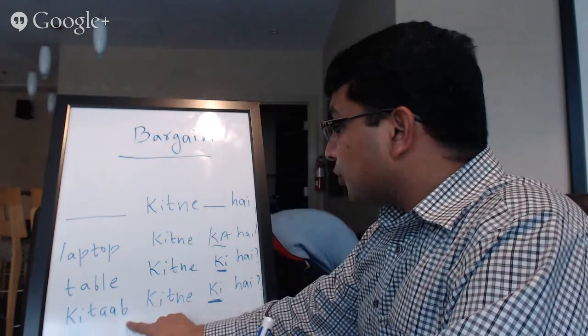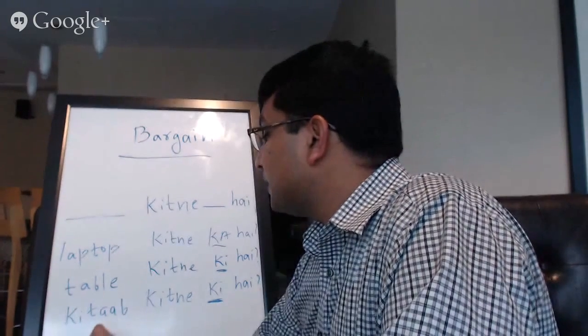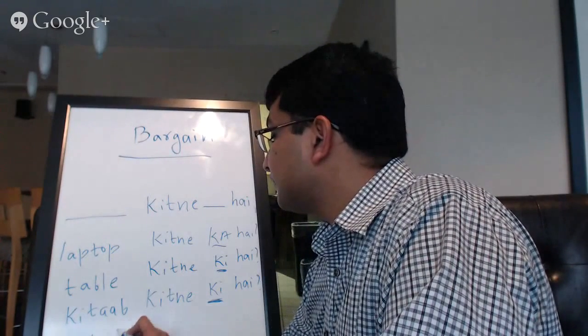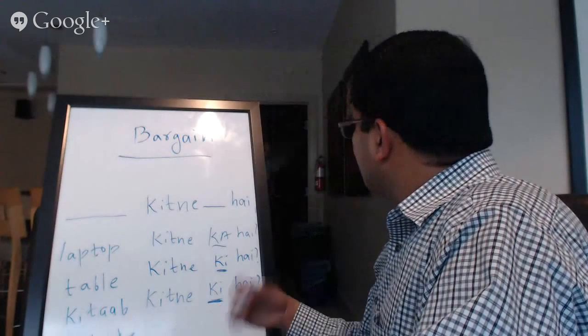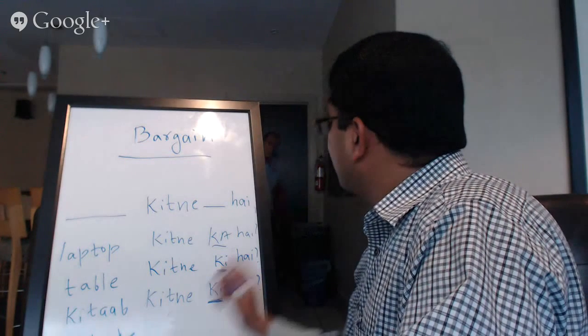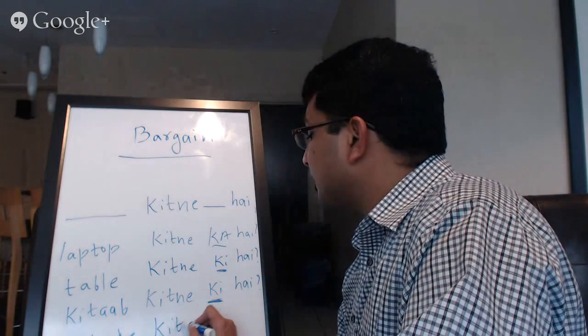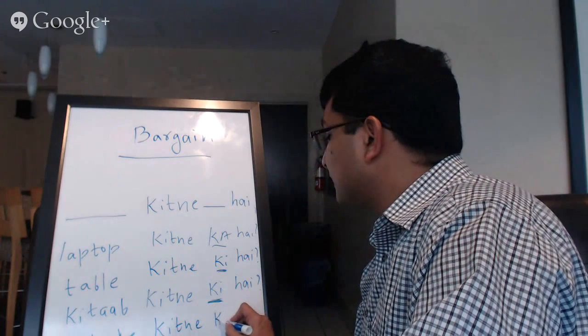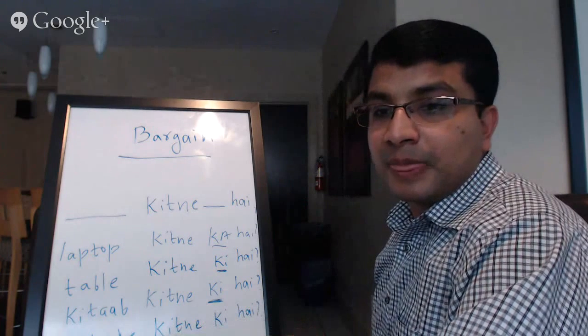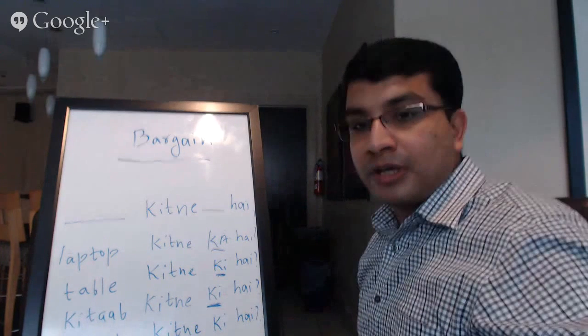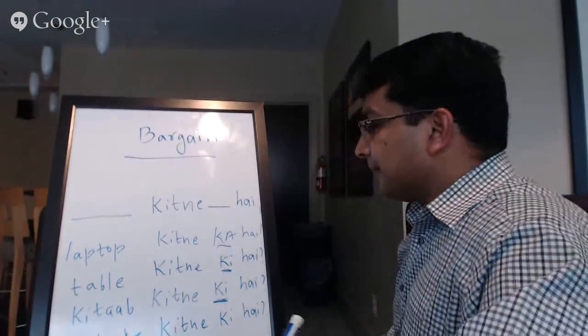So when we are talking about plural here, it will be Kitabein. Kitabein Kitne ki hai. I am not sure if you can see it. If you cannot, let me know and I will change the position of the whiteboard. Kitabein kitne ki hai.